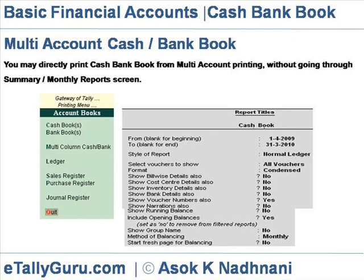Multi-Account Cash Bank Book. You may directly print Cash Bank Book from Multi-Account Printing without going through the Summary Monthly Reports screen. At Gateway of Tally, select Multi-Account Printing, then Account Books, then Cash Book to get the Multi-Account Accounts Books menu.